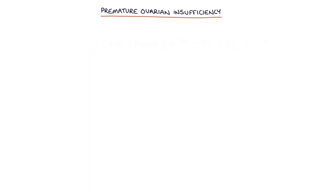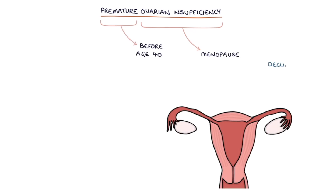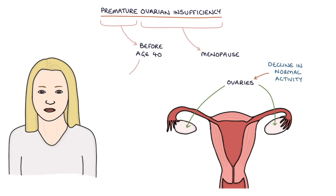Premature ovarian insufficiency is defined as menopause before the age of 40 years. It's the result of a decline in the normal activity of the ovaries at an early age, and it presents with early onset of the typical symptoms of the menopause.